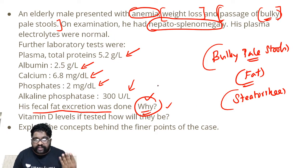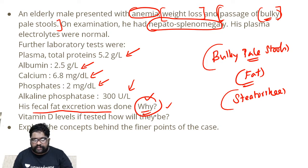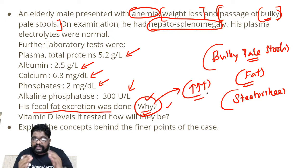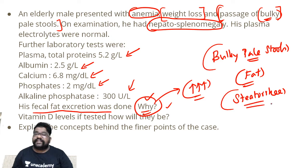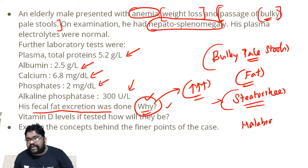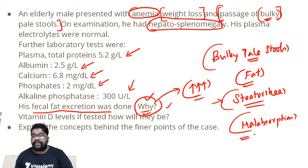I want to quantify how much fat has been excreted in the fecal material. If the concentration of fat is high in the fecal material, it can go along with my thought process that the patient is having a condition called steatorrhea. Steatorrhea is a condition where there is malabsorption of fat, and that can be related to other kinds of absorption becoming defective also.